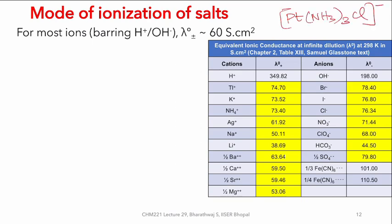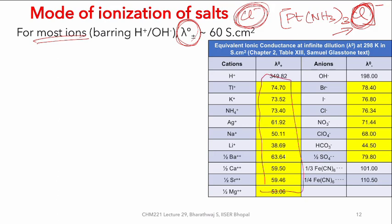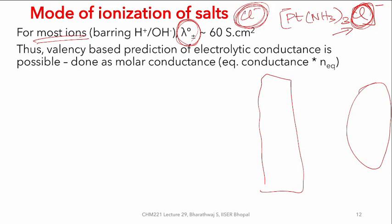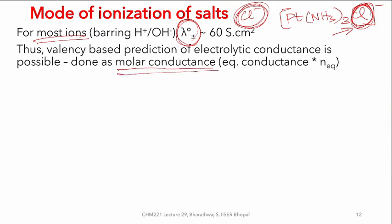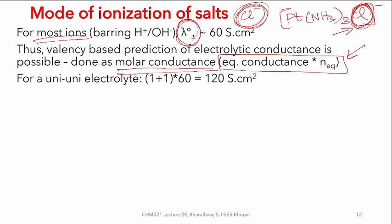One can also use the same principle to measure other parameters — for instance with a platinum coordination complex, one always has doubt about whether chloride is coordinating with platinum or is freely present in solution. Thankfully, free chloride helps in conductance while chloride caught within the coordination compound is not available for conducting electricity. One can exploit the fact that for most ions the equivalent ionic conductance is around 60 S·cm², so if you know the type of electrolyte, molar conductance = equivalent conductance × number of equivalents.